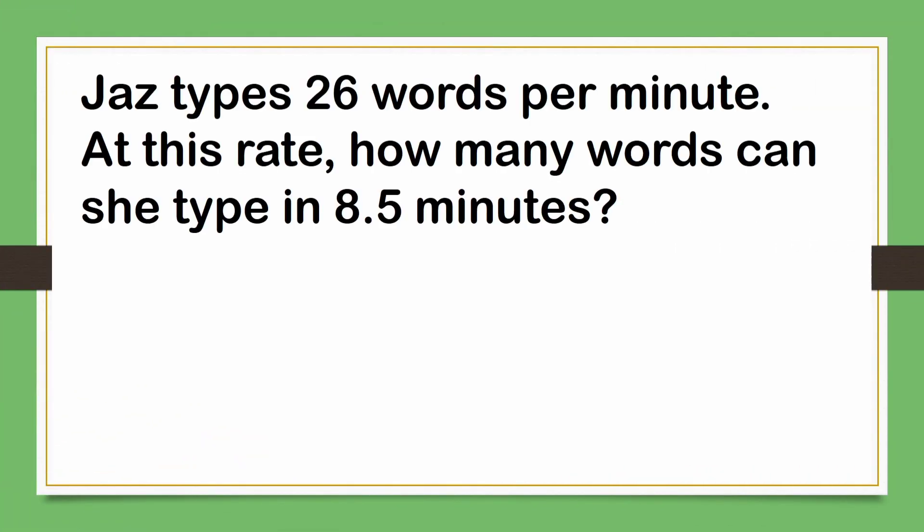Last question. Jazz types twenty-six words per minute. At this rate, how many words can she type in eight point five minutes? Letter A, one hundred ninety-eight. B, two hundred twenty-one. C, two hundred eighty-three. Or Letter D, three hundred one. The answer is Letter B, two hundred twenty-one.